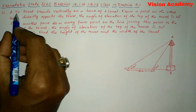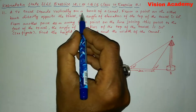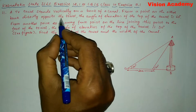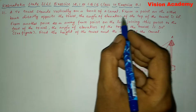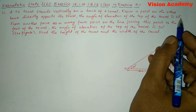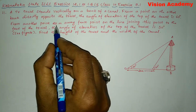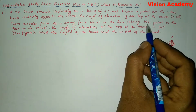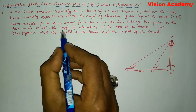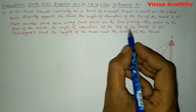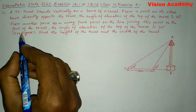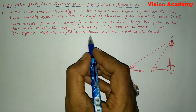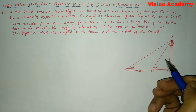Question number 11: a TV tower stands vertically on a bank of a canal. From a point on the other bank directly opposite the tower, the angle of elevation of the top of the tower is 60 degrees. From another point 20 meters away from that point on the line joining this point to the foot of the tower, the angle of elevation of the top of the tower is 30 degrees. See the figure. Find the height of the tower and the width of the canal.